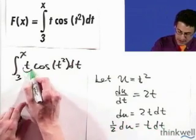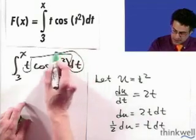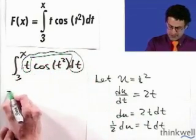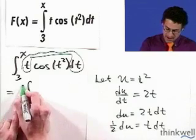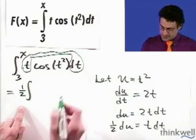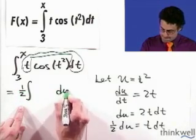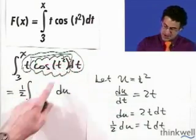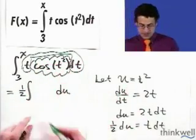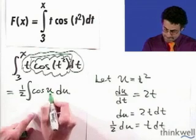So the t dt bubble can be replaced by, let's just consider the indefinite integral first. All of that can be replaced by 1 half. I'll pull that constant multiple out in front, du. And then this inside bubble of cosine t squared is just going to be cosine u. And now we can integrate.